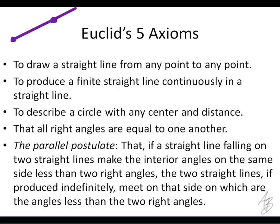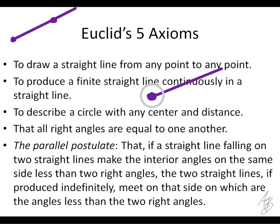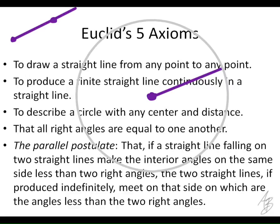The third axiom: to describe a circle with any center and distance. If I tell you where the center is and give you a radius — that's what 'distance' means here — you can create a circle. So given any center and any radius, you can draw a circle. That seems pretty straightforward.